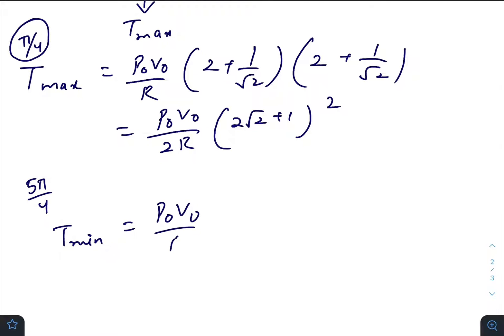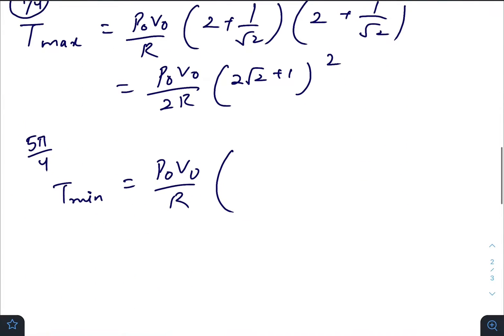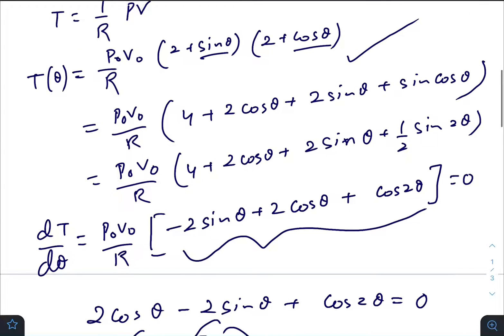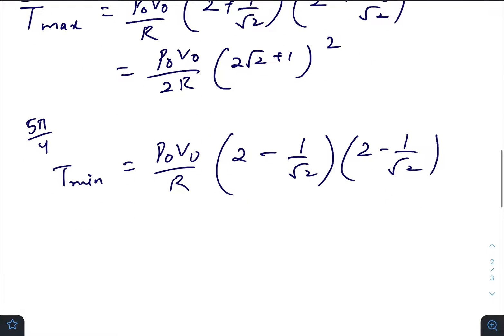p₀V₀ by R. If you put 5π by 4 you would get minus 1 by √2. So 2 minus 1 by √2, fill everything, minus 1 by √2. So p₀V₀ by 2R